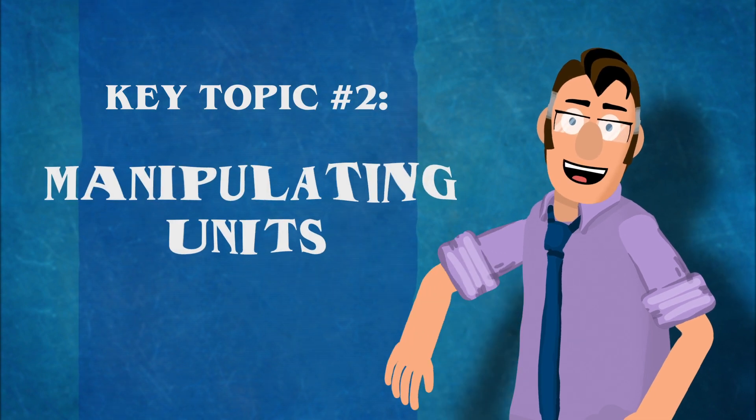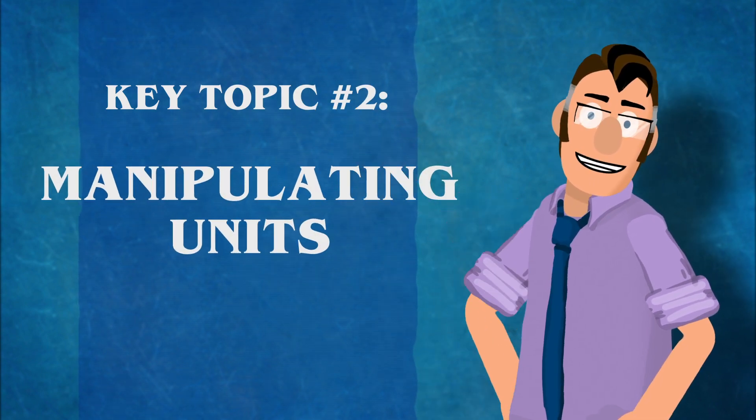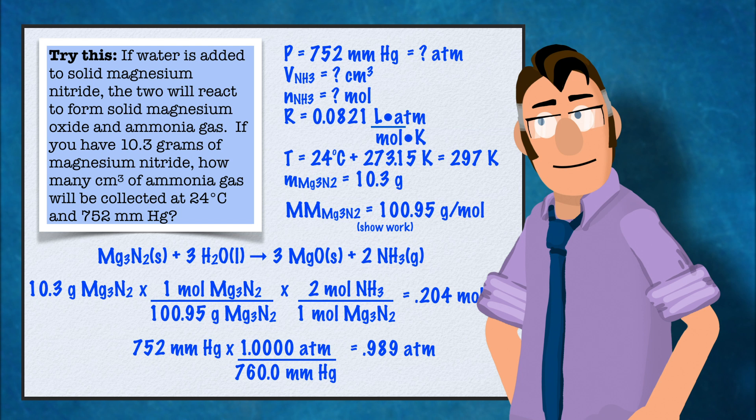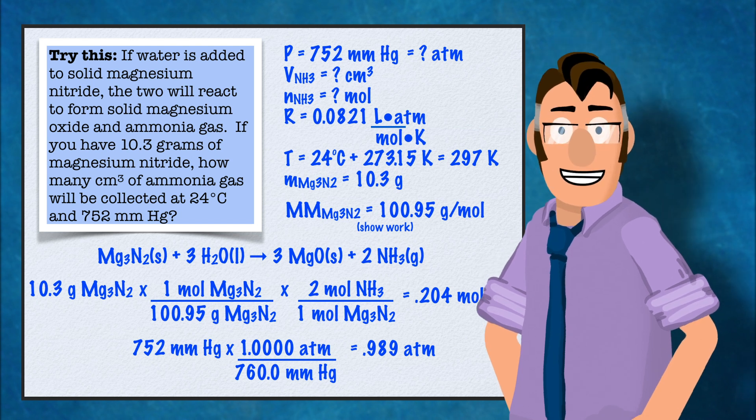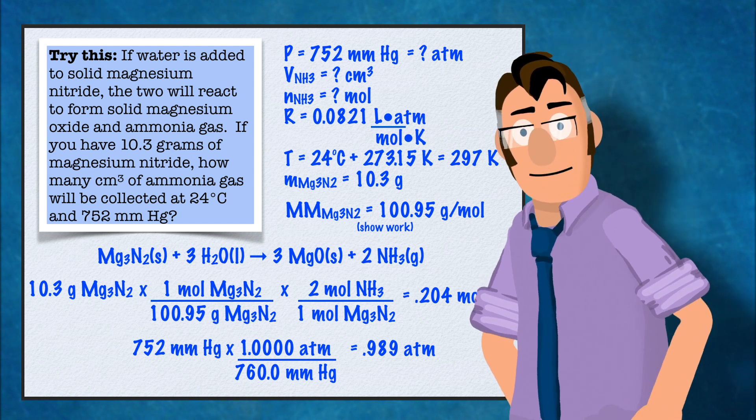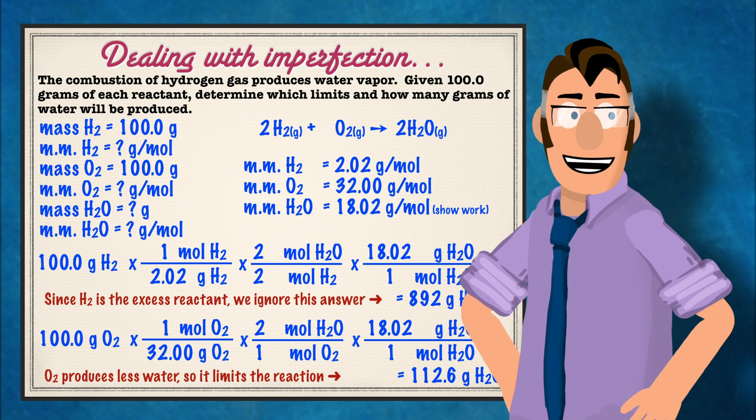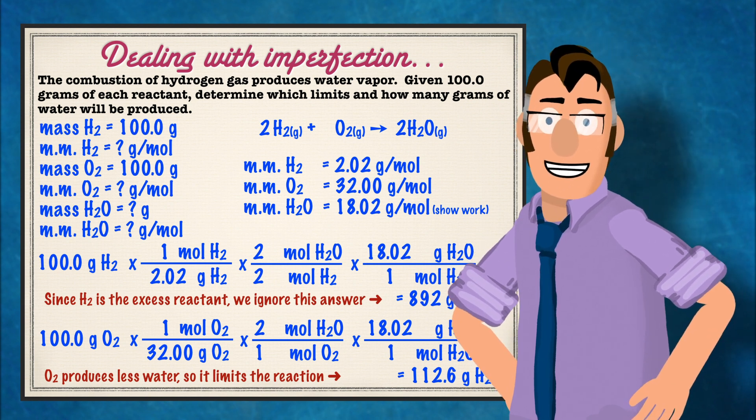Topic number two, manipulating units. As I mentioned in the first video, chemistry is a math class. Make no bones about it. Chemistry uses tons of conversions and algebraic manipulations and all of those are chock full of units.